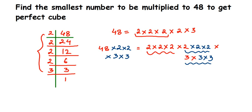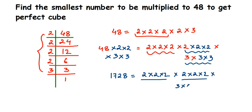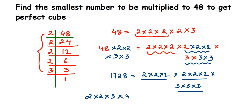48 multiplied by that gives us 1728. So 1728 = 2 × 2 × 2 — one set — into 2 × 2 × 2 — another set — into 3 × 3 × 3. If a number is a perfect cube, you will get sets of three like this. The smallest number to be multiplied is 2 × 2 × 3 × 3 = 4 × 9 = 36. So the smallest number to be multiplied to 48 is 36.